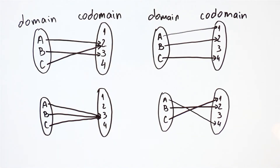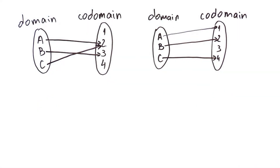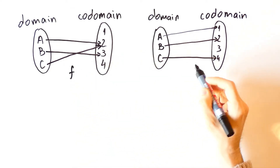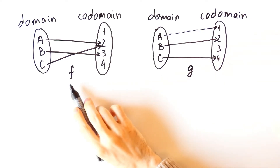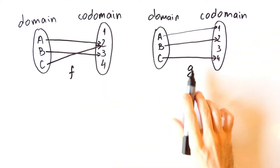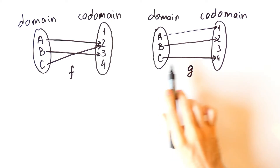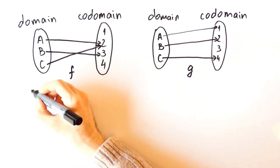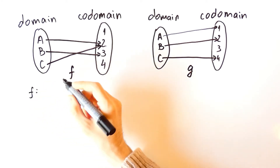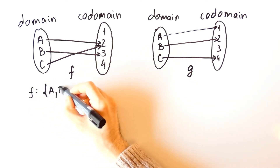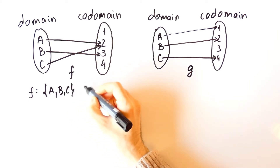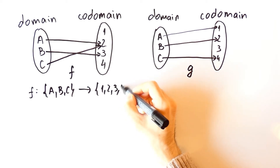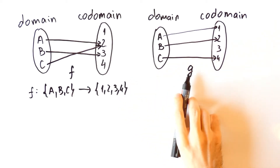Now we'll focus on the two functions on the top. Let's call this function f and this function g. Both f and g are functions from the set of A, B and C to the set of 1, 2, 3 and 4. Here is one way to write that: f, colon, the domain, an arrow and the codomain — and the same way for g.